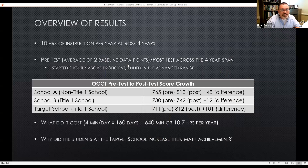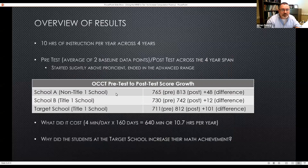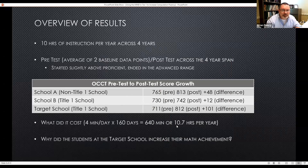The pre-test is the average of the two baseline data points and the post-test is the final. The non-title, high-SES school in the district grew 48 points on the state test. The other low-SES school grew 12, and the school we were in grew 101. What did it cost? Four minutes a day, 160 days — 10.7 hours per year.